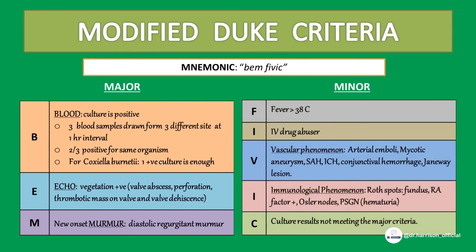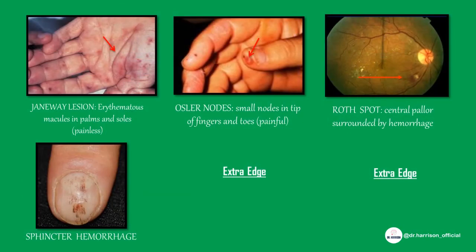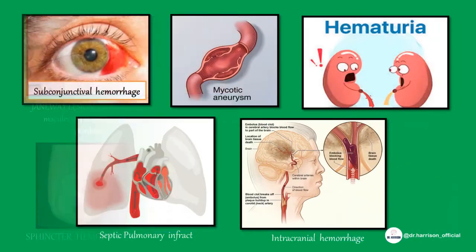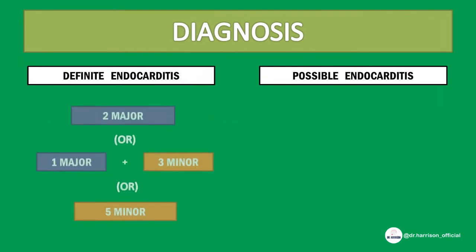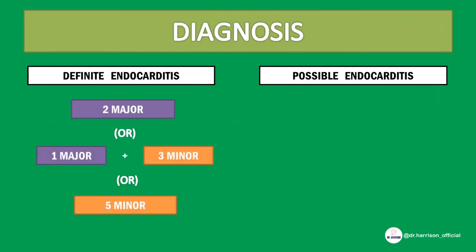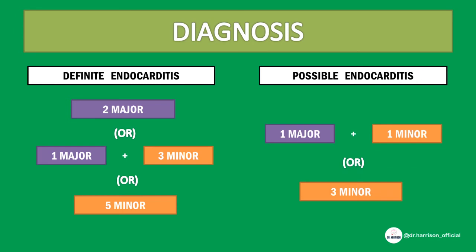Minor criteria: F for fever greater than 38 degrees Celsius. I for IV drug abuser. V for vascular phenomenon. I for immunological phenomenon. C for culture results not meeting the major criteria. For definitive diagnosis: two major criteria, or one major plus three minor, or five minor criteria is required. For possible diagnosis: one major and one minor, or three minor criteria are required.